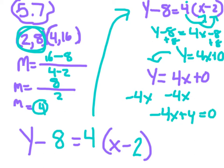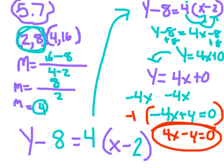But in clean standard form, we actually like to have no negatives for our first integer. So we're just going to multiply this by negative 1. So we'll end up with 4x minus y equals 0. And that is the answer.